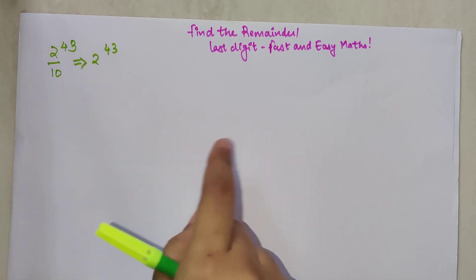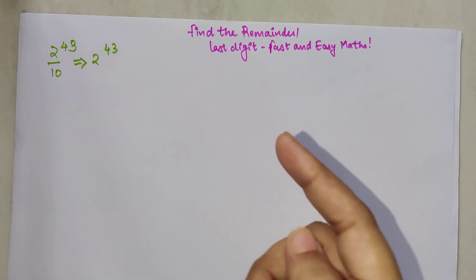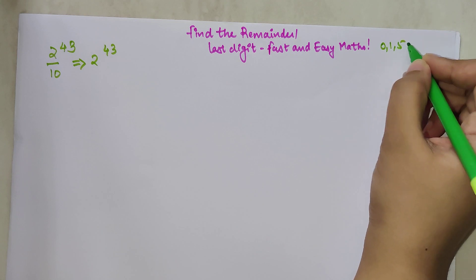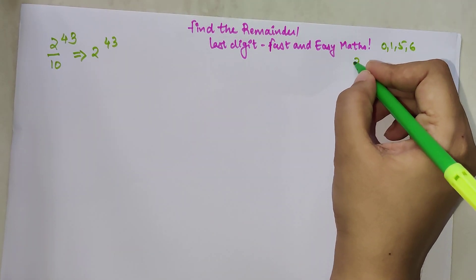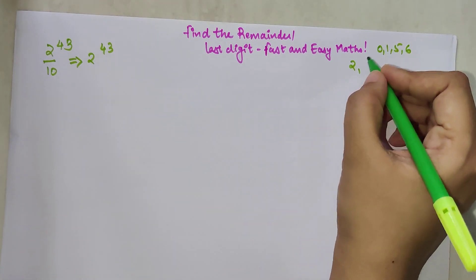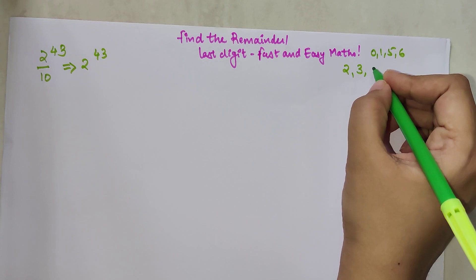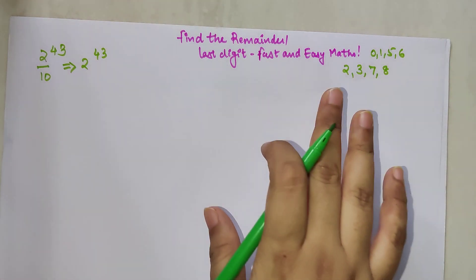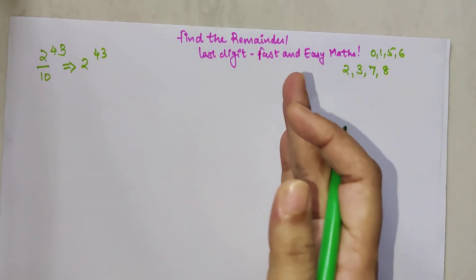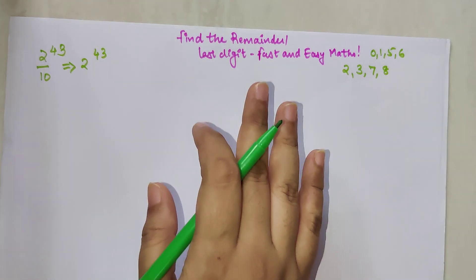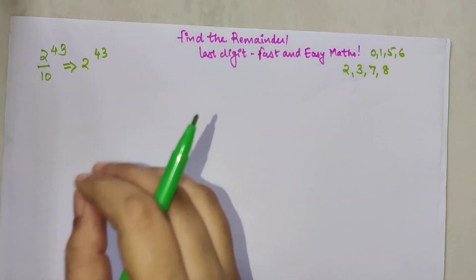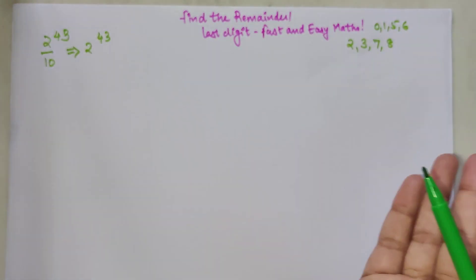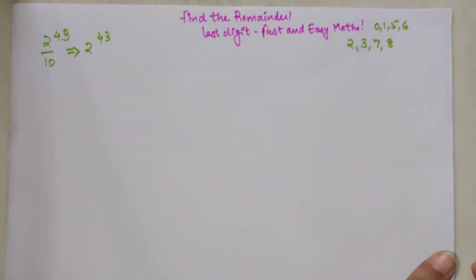The previous video covered numbers ending in 0, 1, 5, and 6. Today we are going to do sums related to numbers which end in 2, 3, 7, and 8. For 4 and 9 I'm going to make another video later this week. It is very important that you pay attention to all the tricks in this video because 4 and 9 are much easier once you know this particular trick.